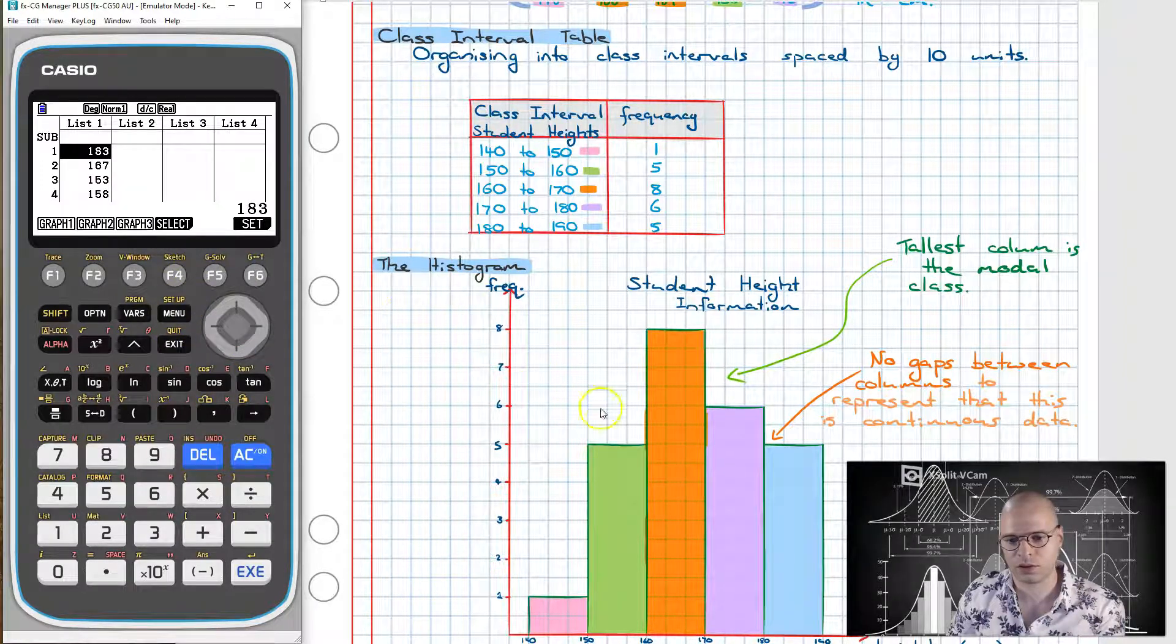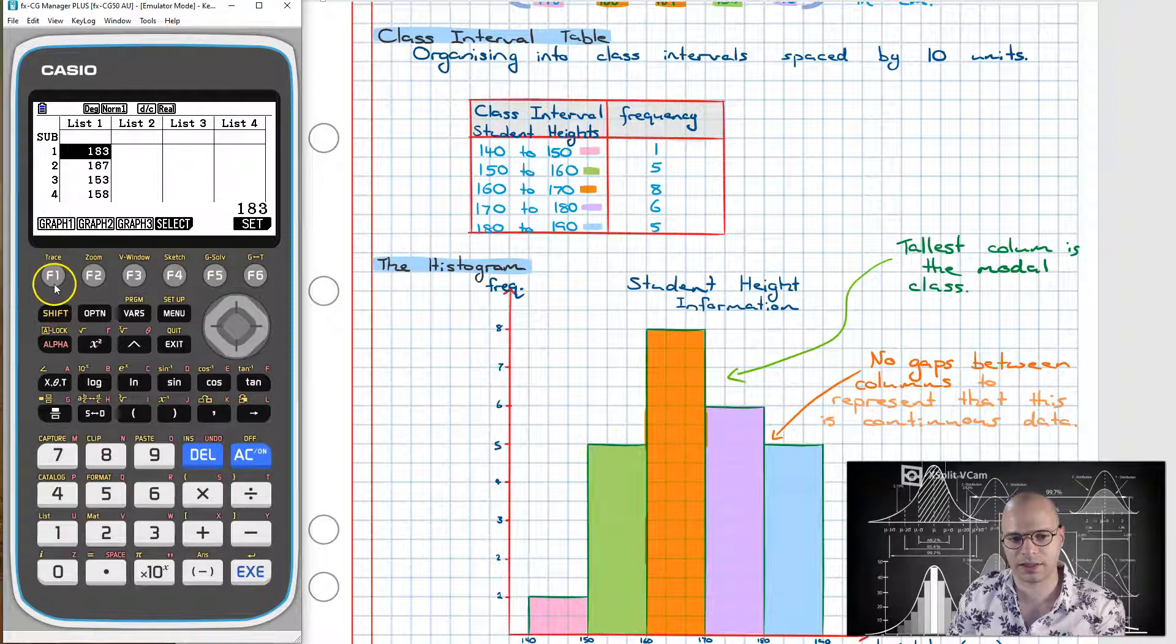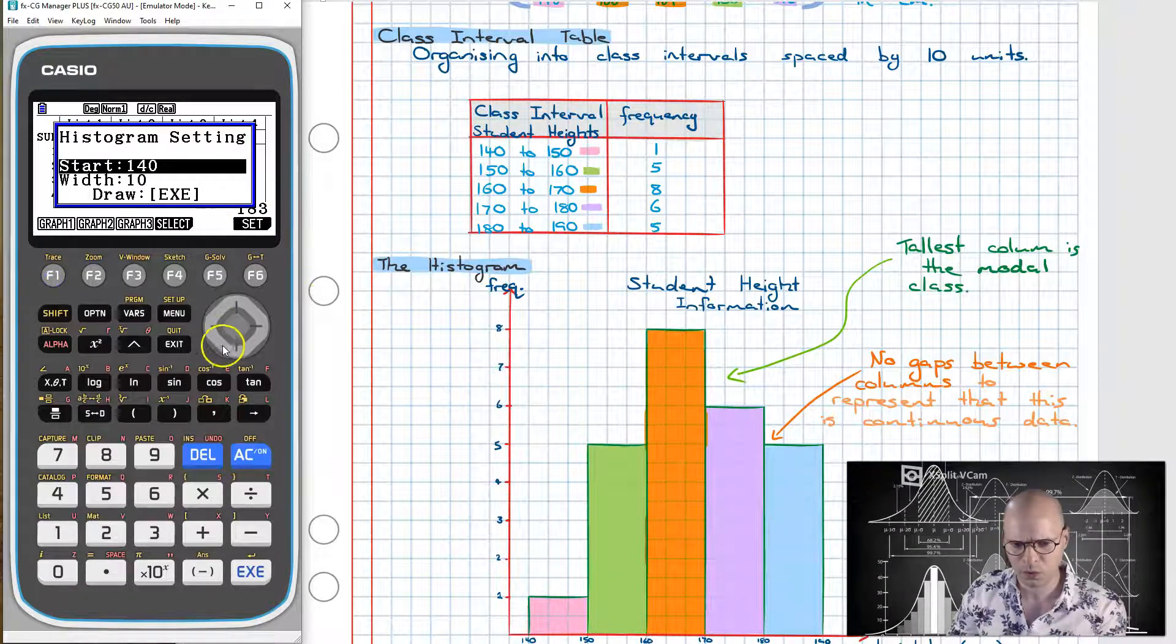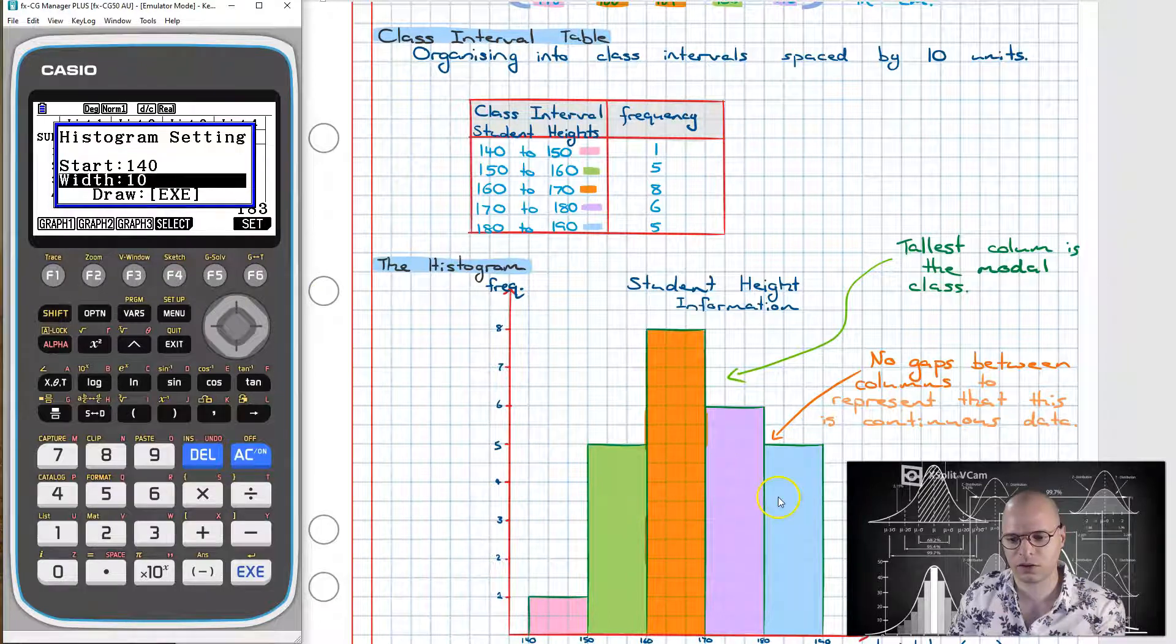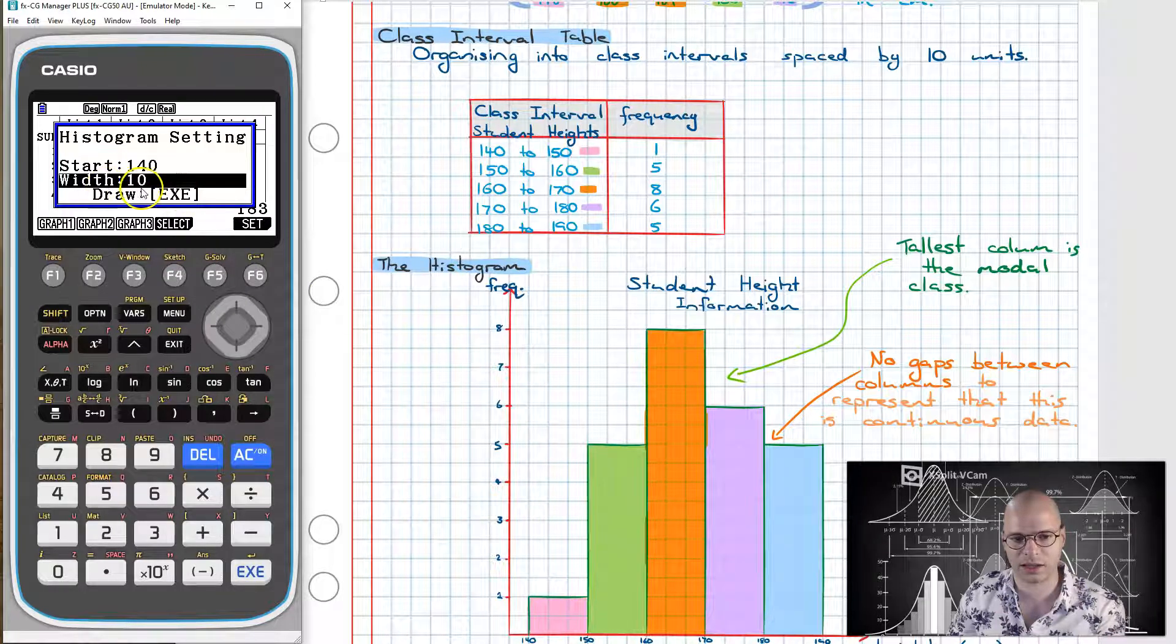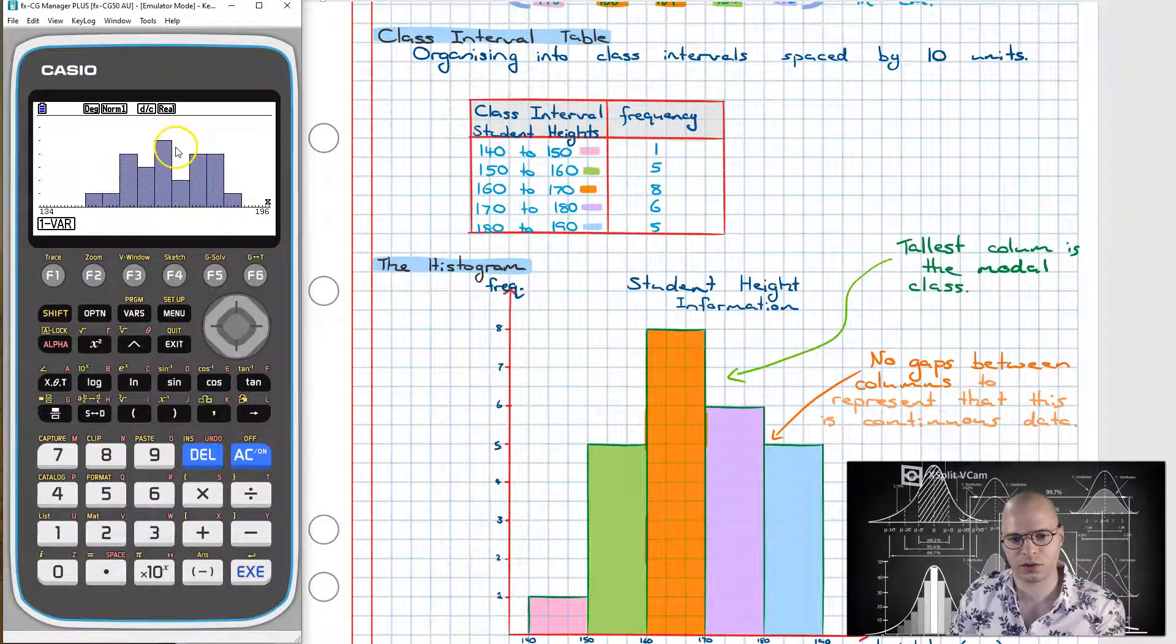Now we're not constricted to just having a class interval of 10. The power of the calculator is that we can change the class interval with relative ease. So say I want to get a finer resolution of observing this graph. I can change the class interval from 10 units to 5. Lo and behold we get a histogram where there's finer resolution shown here.